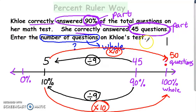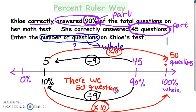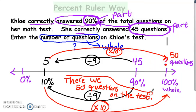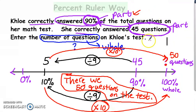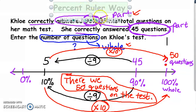So how many questions were on Chloe's test? There were 50 questions on the test. Again, the percent ruler was the tool I used — it's not the only way, but it's my favorite. You need to know what the parts are, what the wholes are, and how to move around a percent ruler using multiplication and division. Good luck with these percent problems!